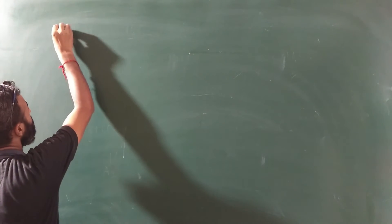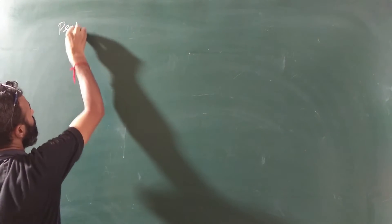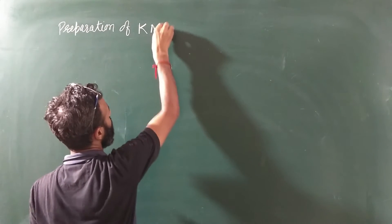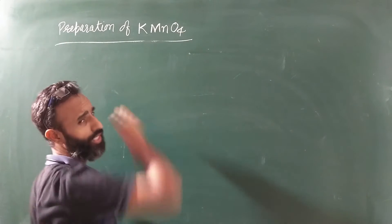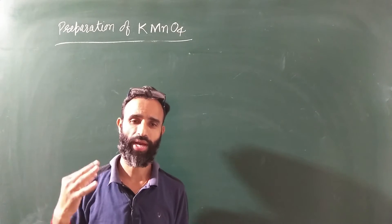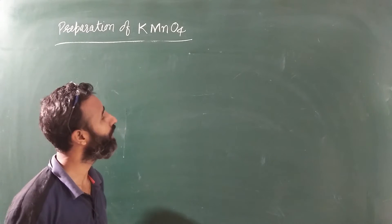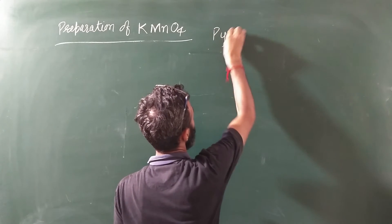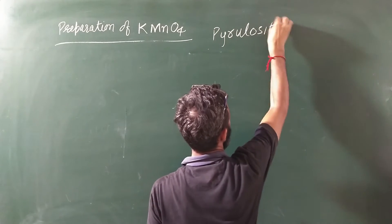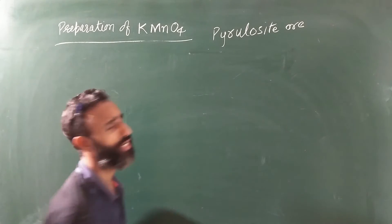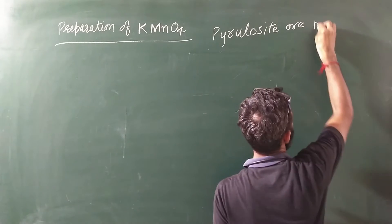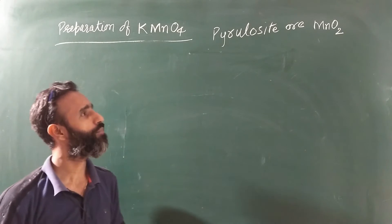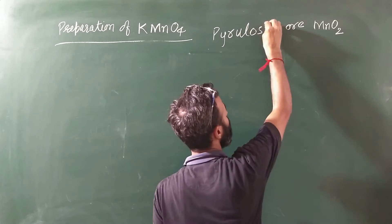Today we have the preparation of KMnO4. KMnO4, you know, is potassium permanganate. Potassium permanganate is prepared from pyrolusite ore — it is called pyrolusite ore. It is MnO2, it is black in color and it is called pyrolusite ore.